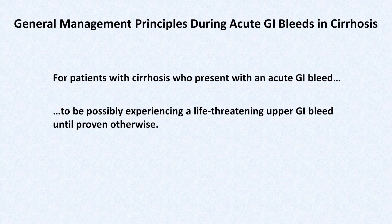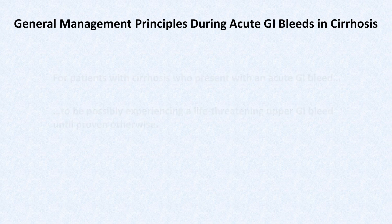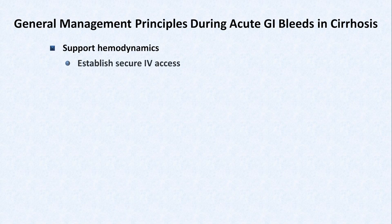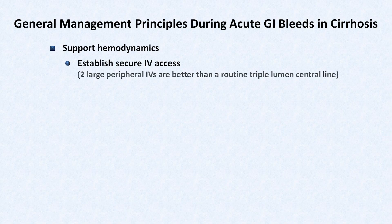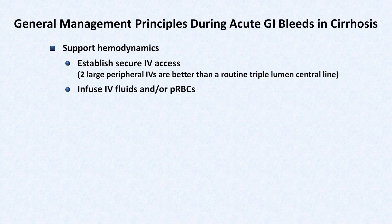What does such a consideration entail? Support hemodynamics by establishing secure IV access. Two large peripheral IVs are better than a routine triple lumen central line. Then start infusing either IV fluids and/or packed red blood cells. Remember that the baseline systolic blood pressure in cirrhosis can run relatively low — 90s to 100s is not uncommon.